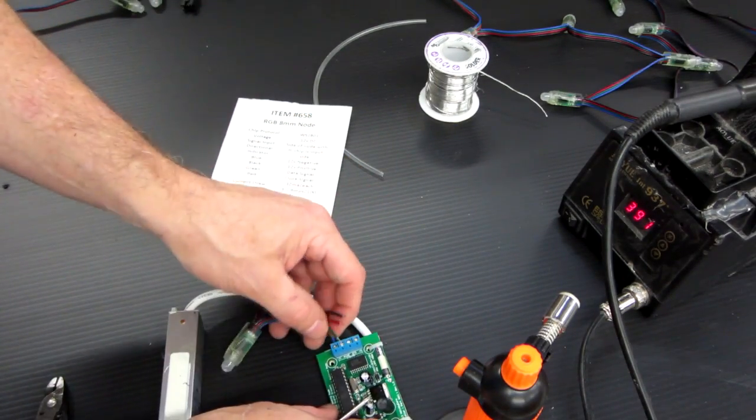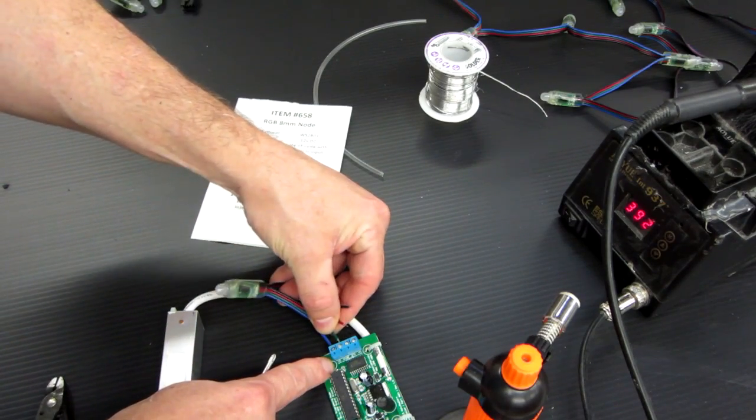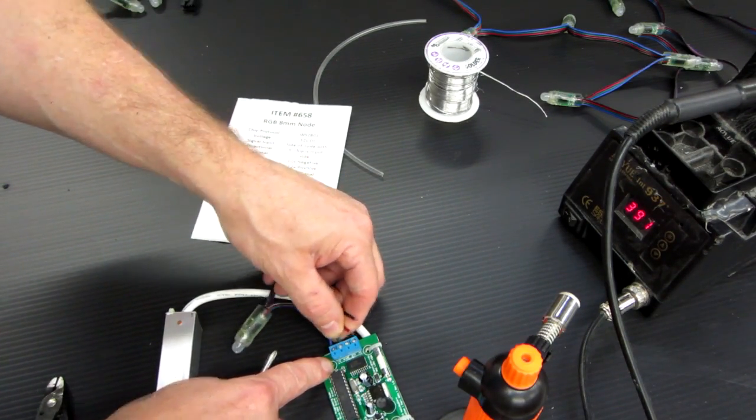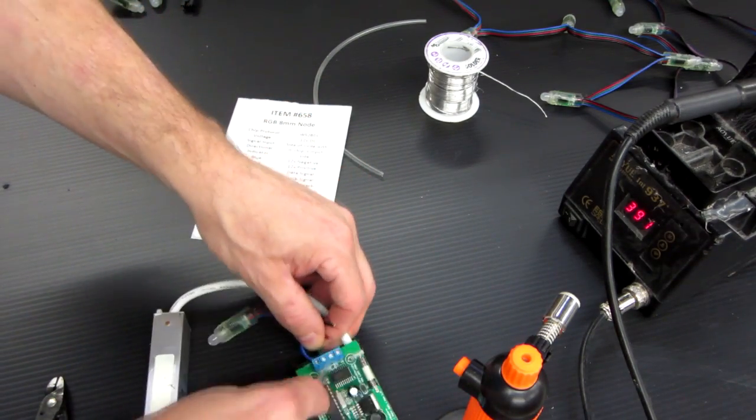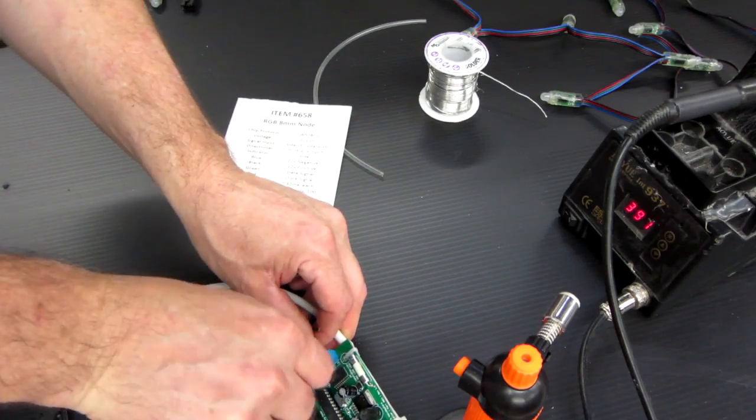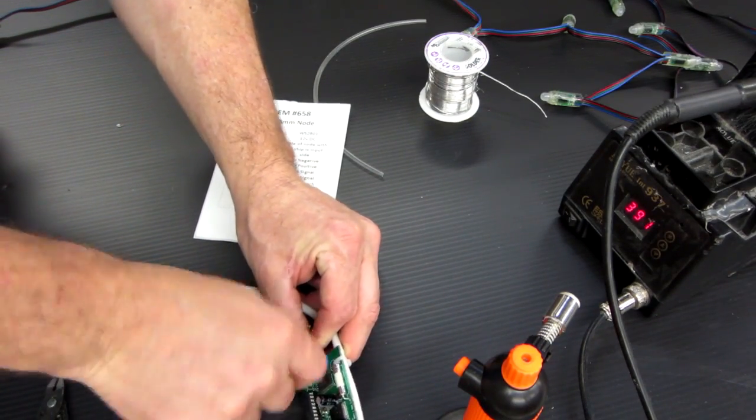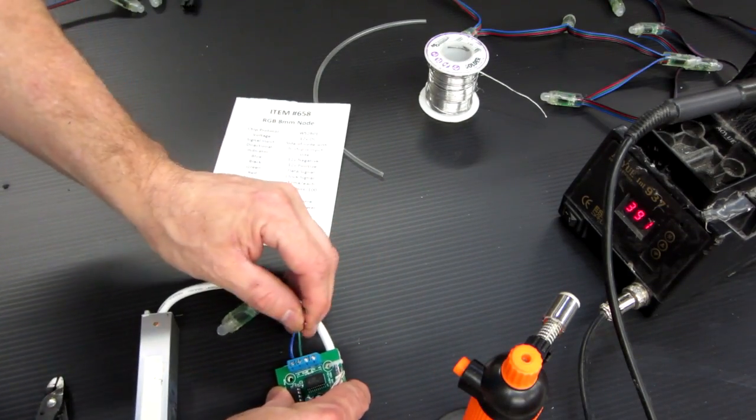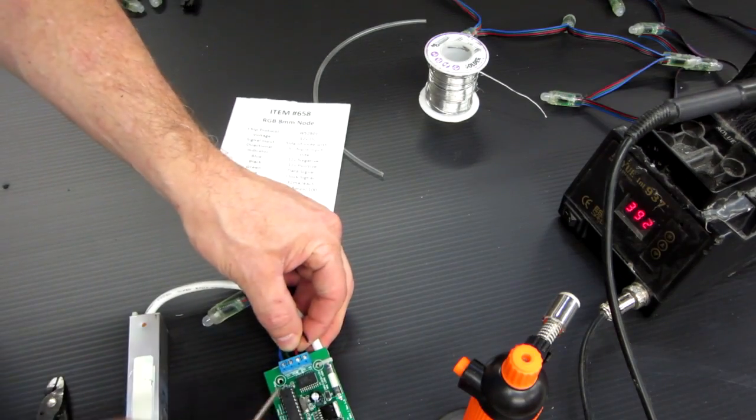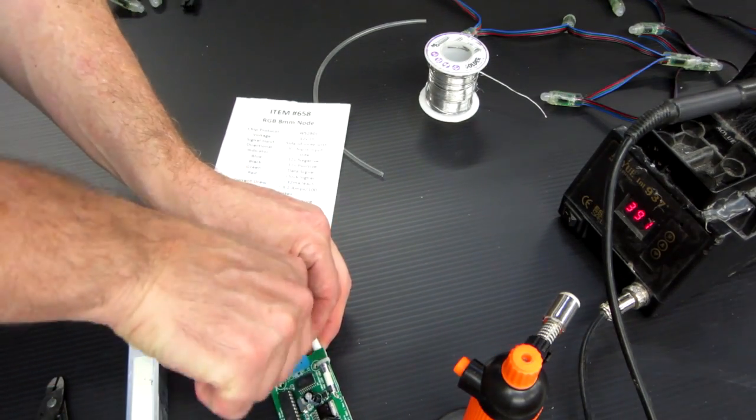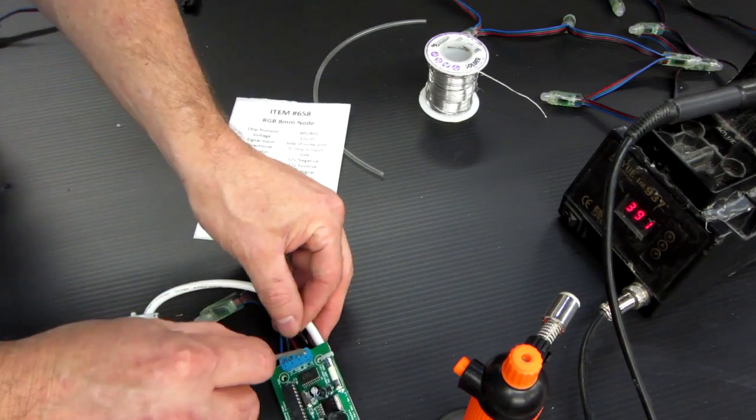First is negative and in this particular case, we have negative on this side. So I'm going to go ahead and just put that in there. Negative, and the negative is blue here. I'm going to screw it down. Next we have data next to the negative, and the data is green. So I'm going to go ahead and hook up my data signal.